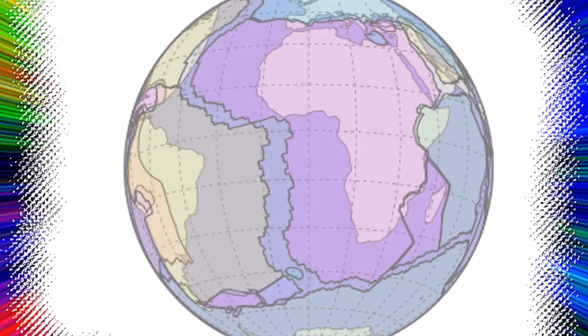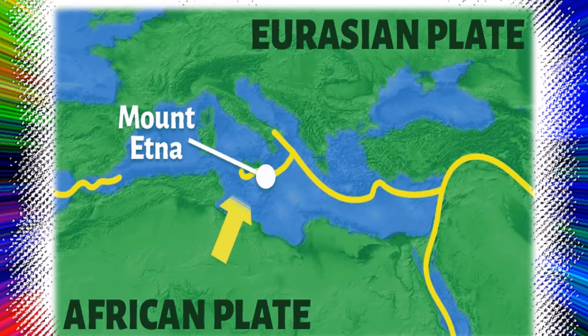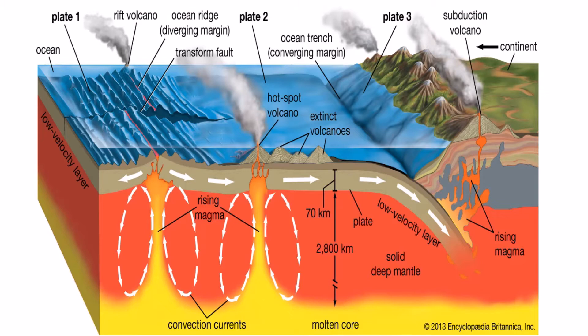In essence, plate tectonic theory is elegantly simple. Earth's surface layer — 50 to 100 kilometers, or 30 to 60 miles, thick — is rigid and is composed of a set of large and small plates. Together, these plates constitute the lithosphere, from the Greek lithos, meaning rock. The lithosphere rests on and slides over an underlying partially molten, and thus weaker but generally denser, layer of plastic partially molten rock known as the asthenosphere, from the Greek asthenos, meaning weak.